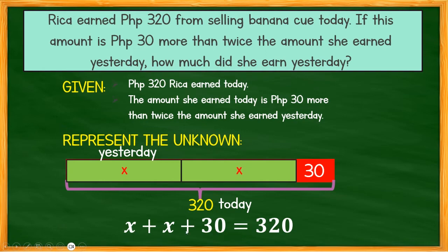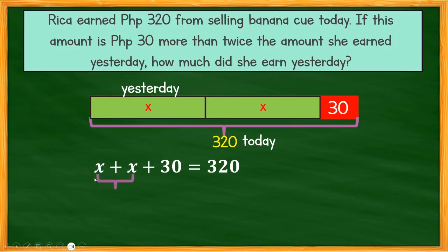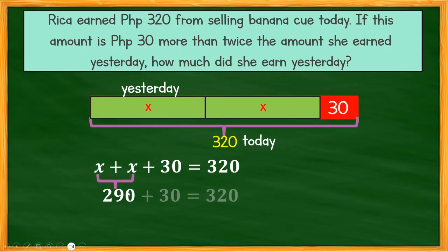So the equation is: X plus (X plus 30) equals 320. Combining, 2X plus 30 equals 320. Subtract 30 from 320: 2X equals 290. Divide by 2 because there are two values of X. If we combine 290 plus 30, the answer is 320 — that checks out.